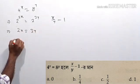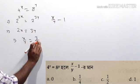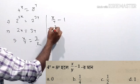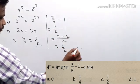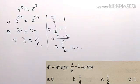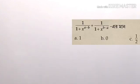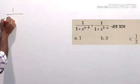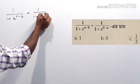2x equals 3y, so x by y equals 3 by 2. 3 by 2 minus 1 gives 3 minus 2 equals 1 by 2. Now consider: 1 by 1 plus x to the power a minus b, plus 1 by 1 plus x to the power b minus a.